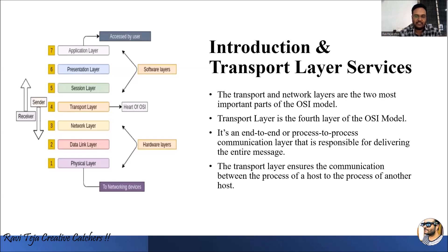The application layer is the topmost layer where the user accesses it in the form of a graphical user interface, like web pages or apps. From the session layer to the application layer, these are considered our software layers. Among these, the third and fourth layers — the network layer and transport layer — are considered the two most important parts of the OSI model.